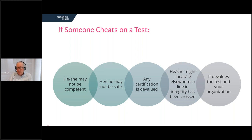But if somebody cheats on a test, important decisions are made on those results, and it's really important to the quality of decisions that results are valid. Cheating really hurts the validity of the assessment. If somebody cheats on a test, they may not be competent, may not be safe, and any certification they get — and others get — is devalued. Also, if you cheat on a test, where else might you cheat or lie? You cross a line of integrity — maybe you'll fiddle expenses, maybe you'll do other cheating. Integrity is important to most organisations, and that's a very important aspect of test security.